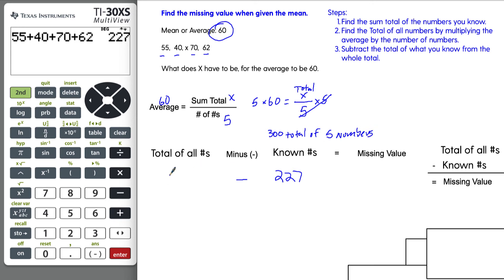So 300 is our total of five numbers. What we have here is 300 minus 227, and that will give us our answer. This is step three, minus 227. So our answer is 73. And you could go back and plug that number in to prove it. You could add 55 plus 40 plus 73 plus 70 plus 62 and divide it by 5, and you will get 60.